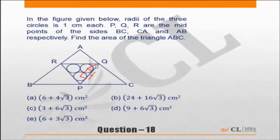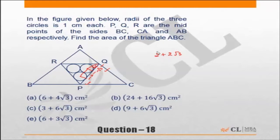Since this angle is 30 degrees, this side is going to be root 3. The side of the equilateral triangle PQR will be 2 plus 2 root 3, because we have 2 here, root 3 here, and root 3 here. The same thing applies on the other side, so 2 plus 2 root 3 is the side of the equilateral triangle.